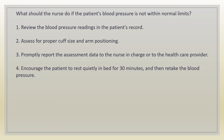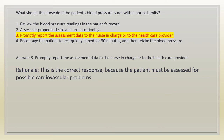What should the nurse do if the patient's blood pressure is not within normal limits? 1. Review the blood pressure readings in the patient's record. 2. Assess for proper cuff size and arm positioning. 3. Promptly report the assessment data to the nurse in charge or to the healthcare provider. 4. Encourage the patient to rest quietly in bed for 30 minutes and then retake the blood pressure. Answer: 3. Promptly report the assessment data to the nurse in charge or to the healthcare provider. Rationale: the patient must be assessed for possible cardiovascular problems.